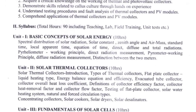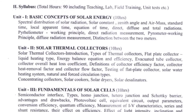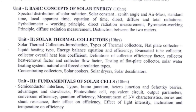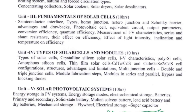The syllabus has 5 units. Unit 1: Basic Concepts of Solar Energy. Unit 2: Solar Thermal Collectors. Unit 3: Fundamentals of Solar Cells. Unit 4: Types of Solar Cells and Modules. Unit 5: Solar Photovoltaic Systems. Reference books are also included.